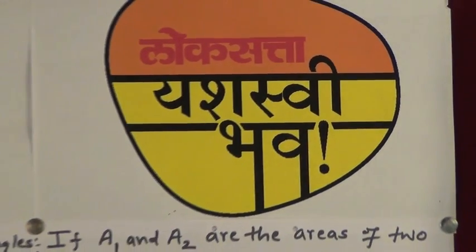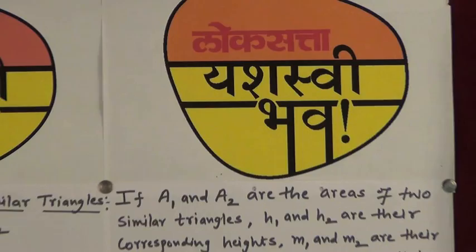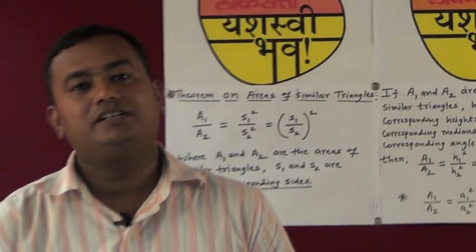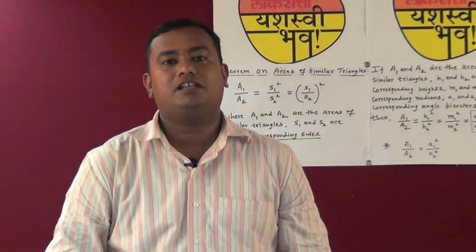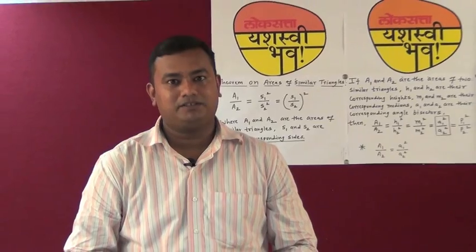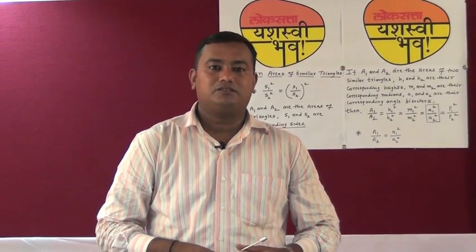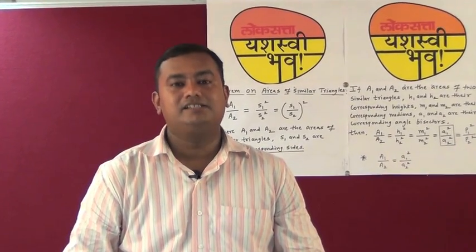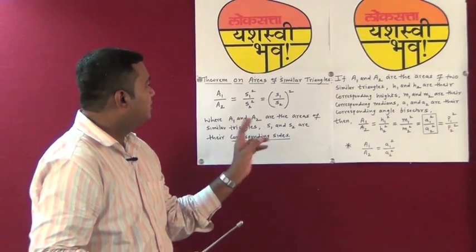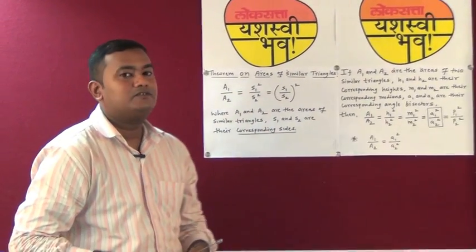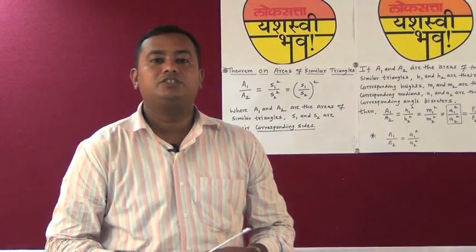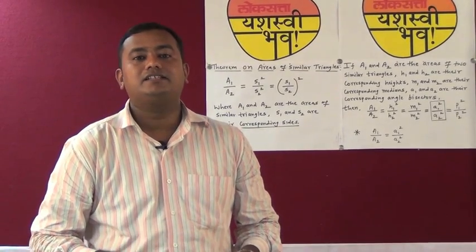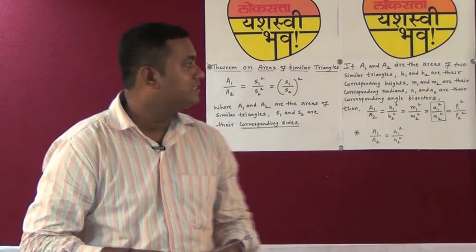Welcome to Lok Satya Yashashvi Bhava. In this particular article, we will study the different types of questions which can be asked in the paper. In your textbook, you have learned about the theorem of areas of similar triangles: the ratio of areas of two similar triangles is equal to the ratio of the square of corresponding sides. This is called the theorem of areas of similar triangles.